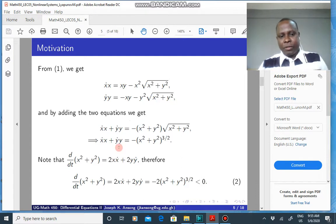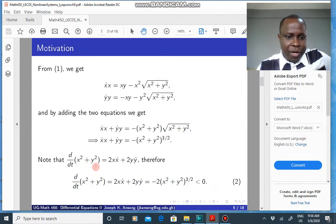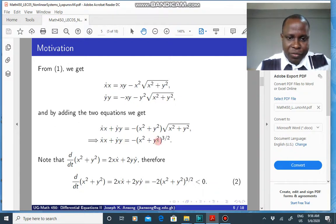Now, note that if you find the derivative with respect to time of x squared plus y squared, you're going to get this quantity here. So we have this. I mean, twice of this is equal to that. So basically, d/dt of x squared plus y squared is equal to this quantity, which you get from here.